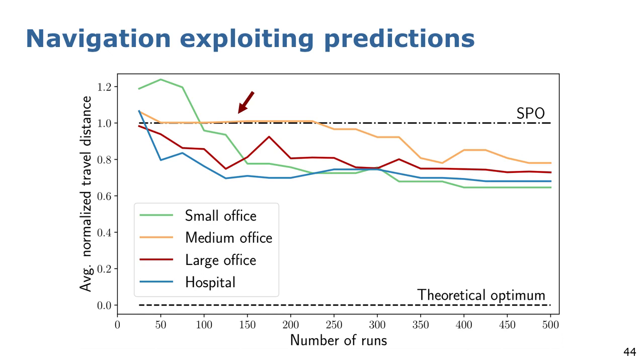Over time, the learning process converges, and after 500 runs, the robot navigates along paths that are on average 30% shorter than following an optimistic shortest path policy.